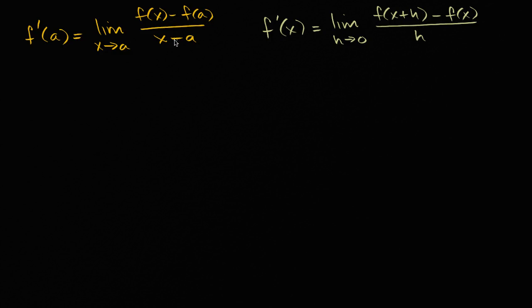These are both ways you'll see limit-based definitions of derivatives. This is usually if you're thinking about the derivative at a point, here if you're thinking about the derivative in general. But these are both equivalent. They're both based on the slope of a tangent line or the instantaneous rate of change.